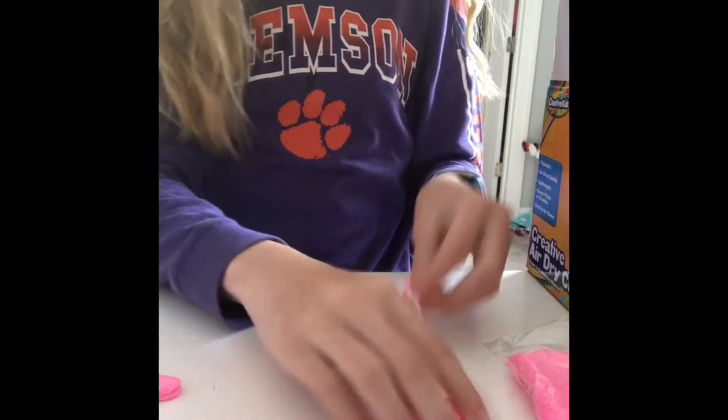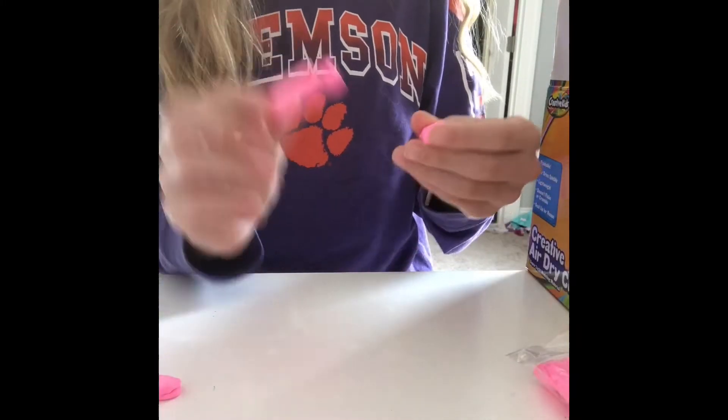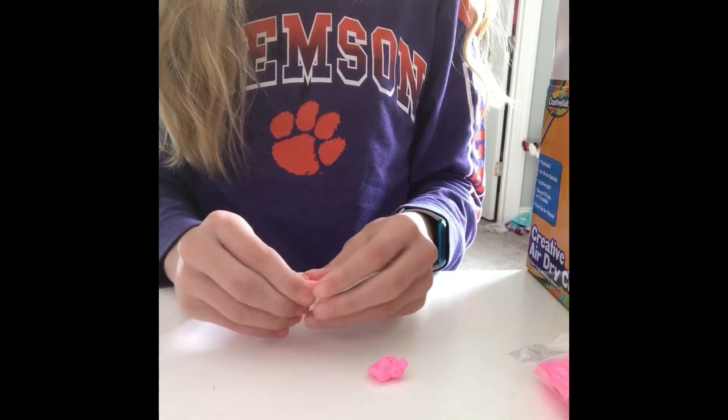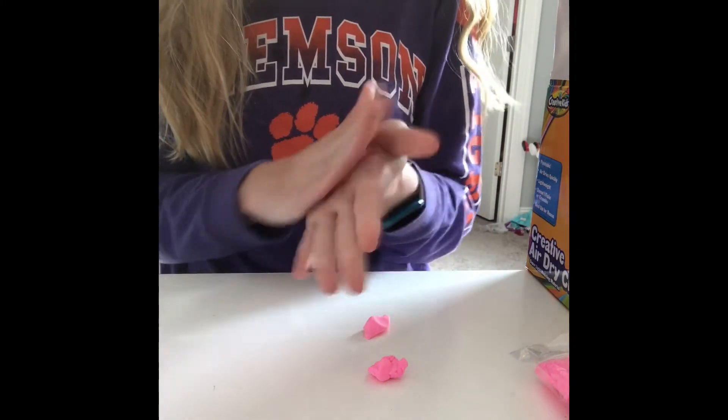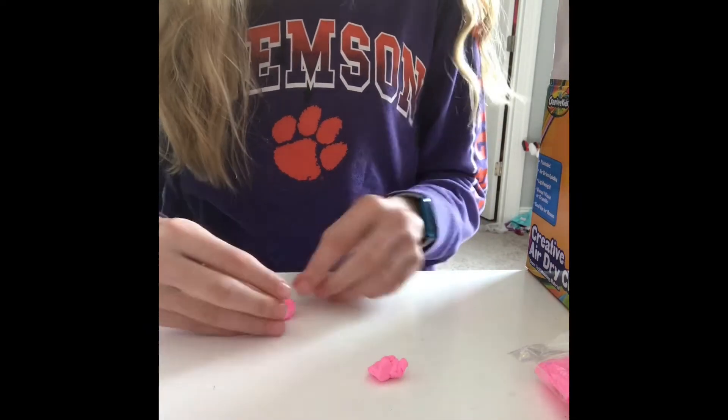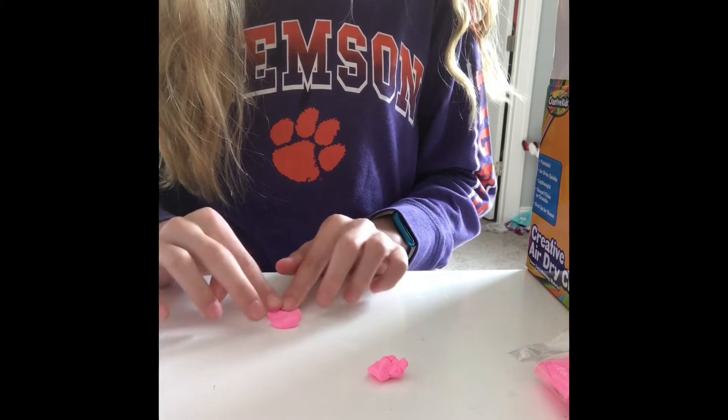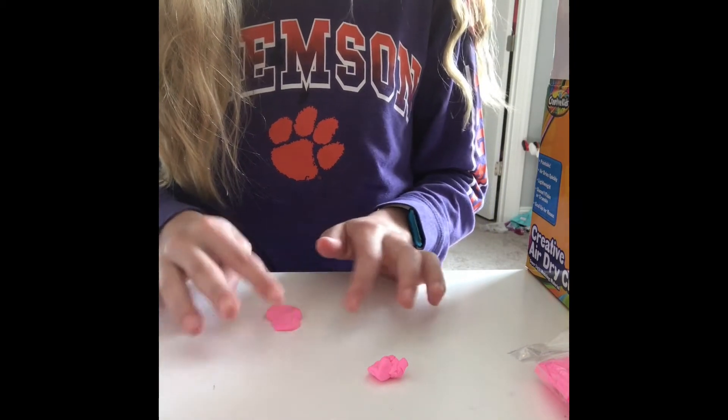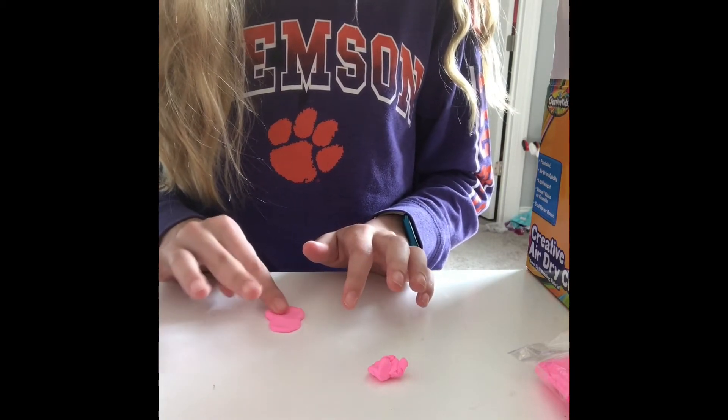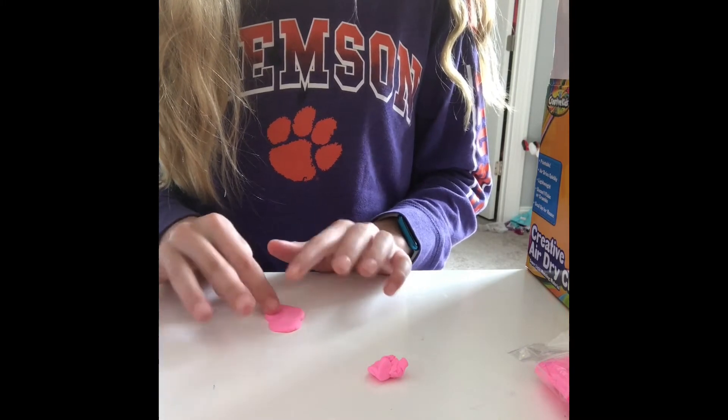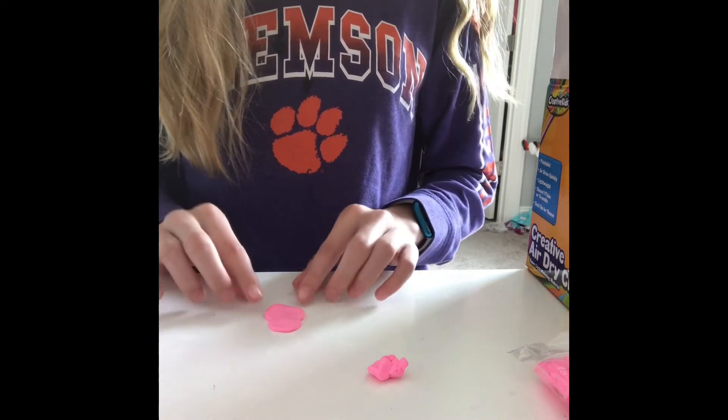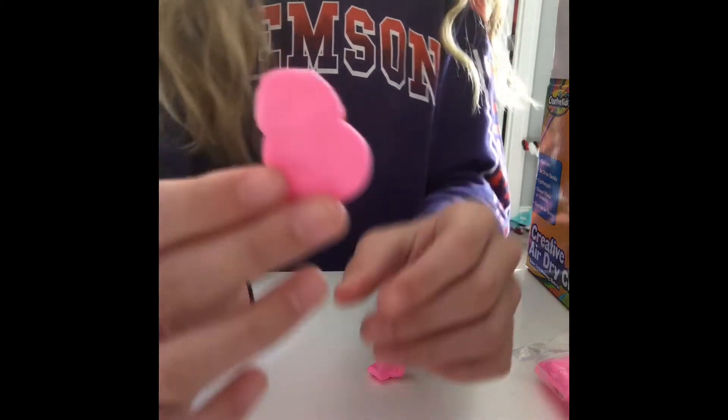Once you have your clay out, it can be any color. You're going to roll two pieces into a ball, one big and one a little bit smaller. Roll them into a ball and when you smush them down they'll smush together. The bigger roll of clay will be the body and the smaller ball will end up being the head.